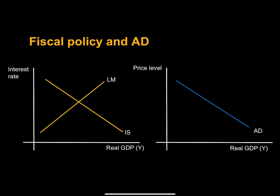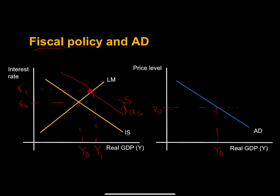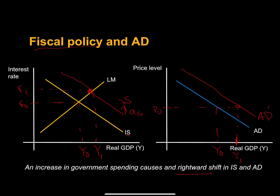Let's try fiscal policy. Fiscal policy, or government spending, is a determinant of our IS curve. If we have an increase in autonomous government expenditures, we should see a rightward shift in our IS curve. If our IS curve shifts to the right, we have a higher level of real expenditures and a higher real interest rate — we're not going to be able to see that just from our aggregate demand curve. We're only going to see the increase in aggregate demand or our rightward shift. So an increase in government purchases leads to a rightward shift in the IS curve and a rightward shift in aggregate demand.